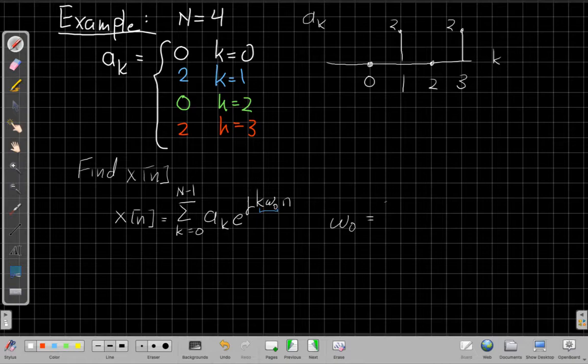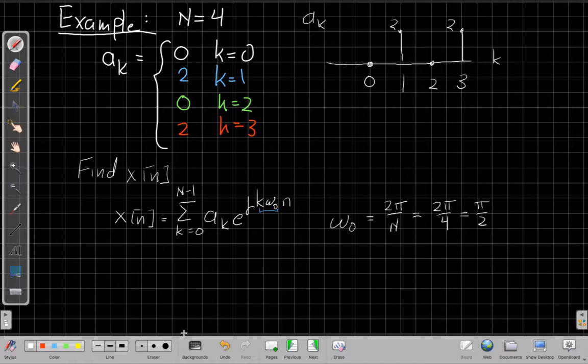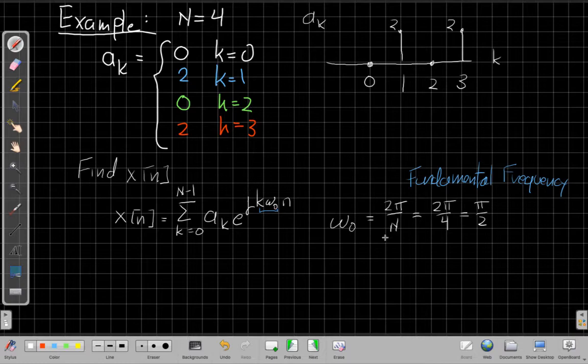So the first thing to get going with this, we need to say, I need to know what omega 0 is. The fundamental frequency omega 0 is always 2 pi over the period. And if I have an integer period, so this will be 2 pi over 4, so that's pi over 2. This is our fundamental frequency.